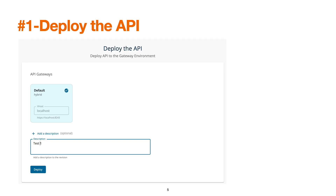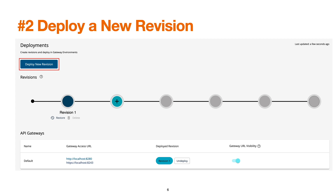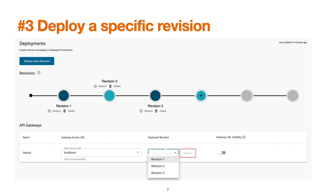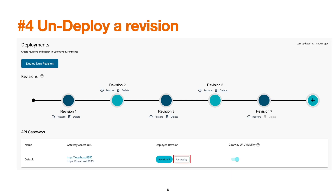We use the publisher portal to deploy the API via the deployments screen. The next step is to deploy a new revision — once a revision has been created, there is a plus sign or a blue button that says 'Deploy a new revision'. A new revision contains the changes made after the first revision was deployed. We can also deploy a specific revision at any point in time using the dropdown option.